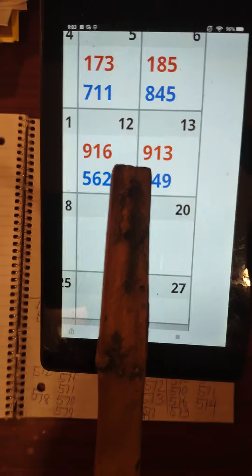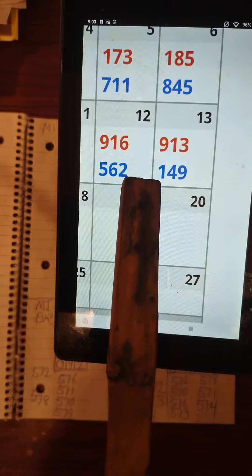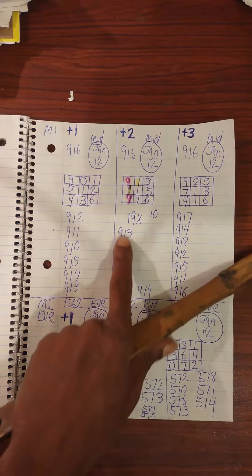On the 13th we got 9-1-3, and then we got 1-4-9. That's the 9-1 pair.